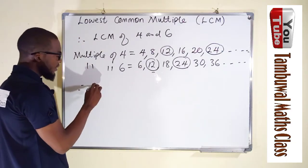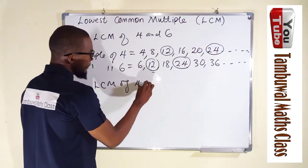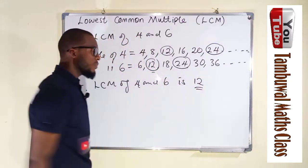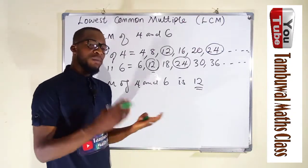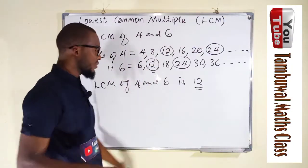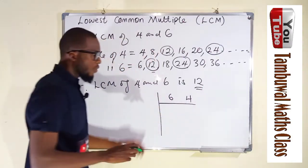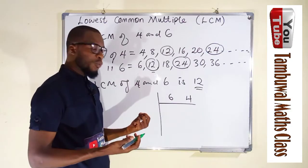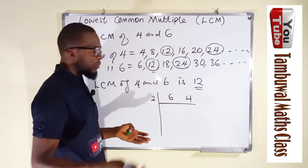The lowest of these is twelve, therefore the LCM of four and six is twelve. But the simplest way to find the LCM is to perform a successive division using prime numbers. We write six and four, then divide them by prime numbers starting with the least prime number, which is two. If two cannot go into a number, you try the next prime number, which is three.